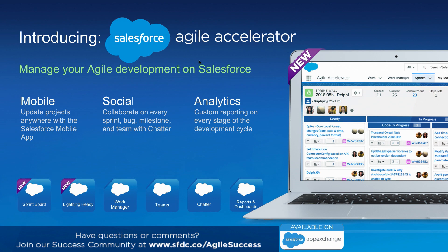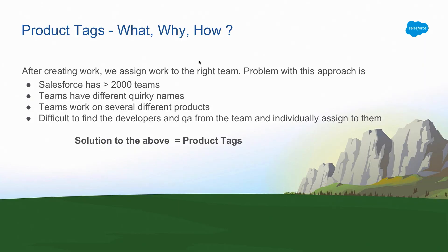To build a product like Agile Accelerator, we definitely had to customize a lot of features on the platform — we had to build custom Lightning components, a lot of Apex code, and even Visualforce pages. We're going to pick a specific custom feature that we built on Agile Accelerator and look into why and how we built it. The feature is called Product Tags.